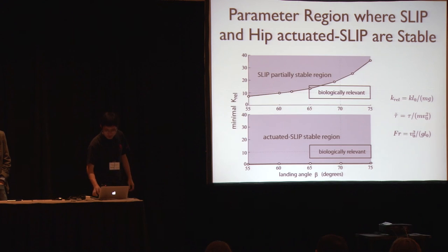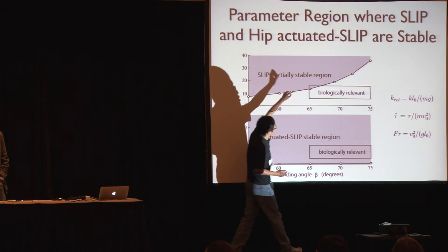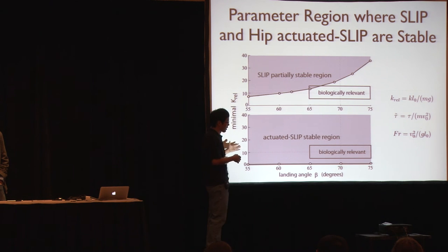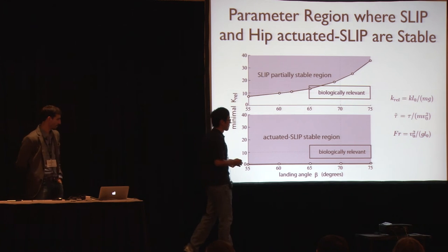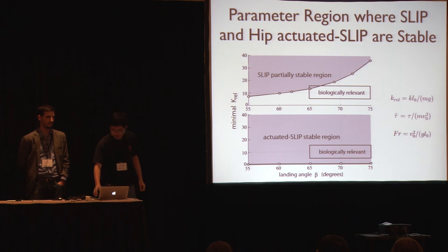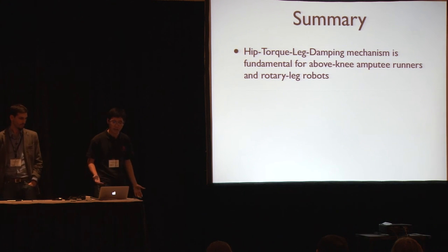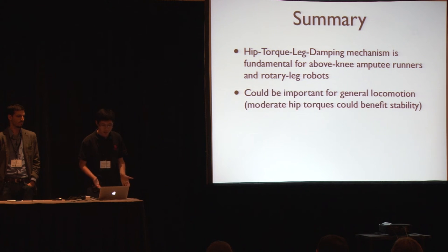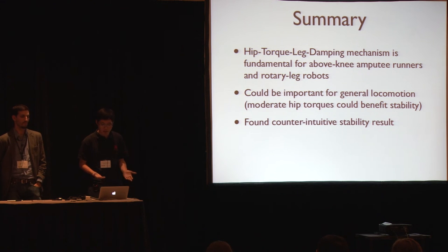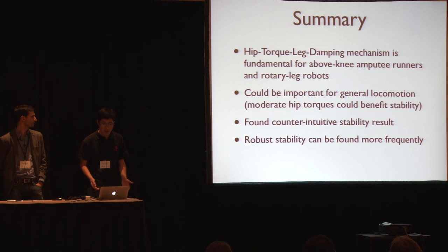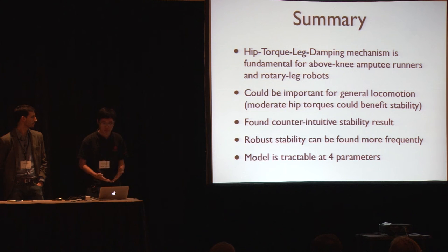Besides the stability basin, we look at biological relevance. For basic SLIP, there is a tiny area covered — a very small biologically relevant region. However, for SLIP with hip torque, with just a medium range of torque values, you can get the biologically relevant area completely covered. In summary, hip torque and leg damping are fundamental for above-knee amputees and robot-like locomotion, and likely important for general locomotion. Counterintuitively, introducing hip torque-like damping first destabilizes the model before eventually improving robust stability. The model has only four non-dimensionalized parameters.